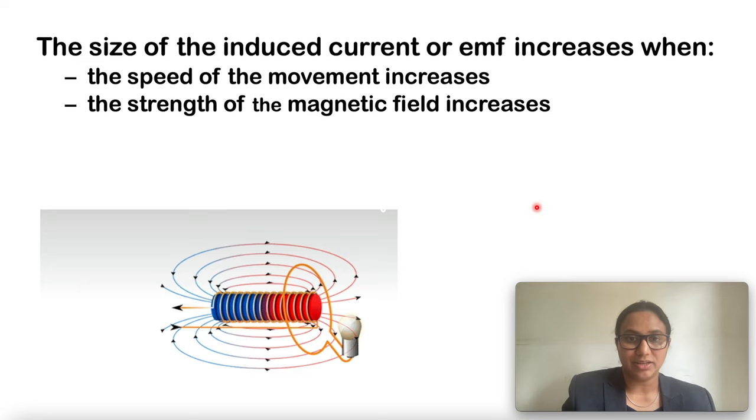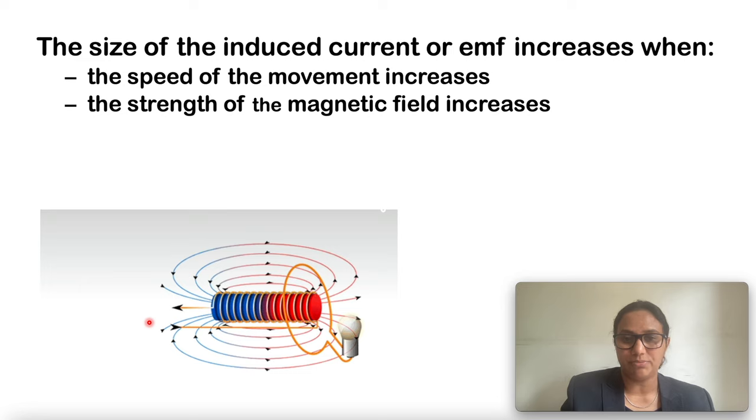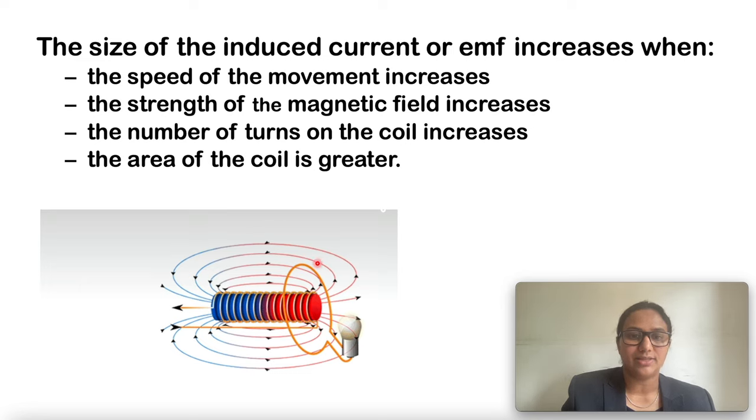Second point is the strength of the magnetic field increases. If you have a strong magnet, then you can increase the induced current or EMF. Third point is the number of turns on the coil increases. And the last one is the area of the coil is greater.